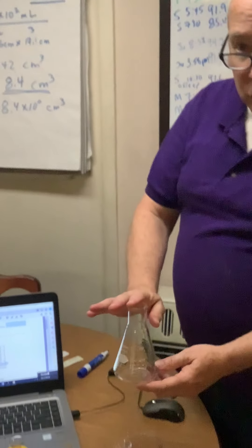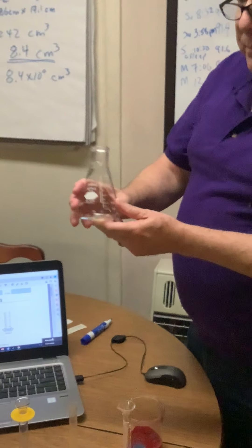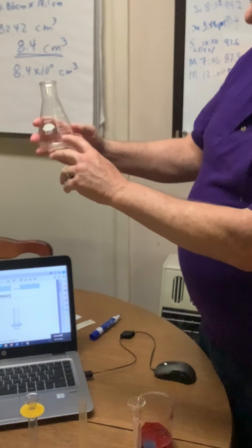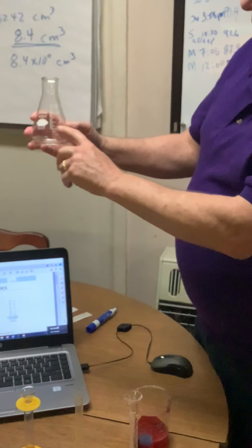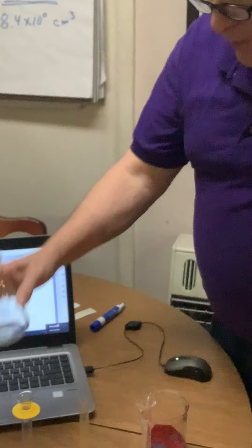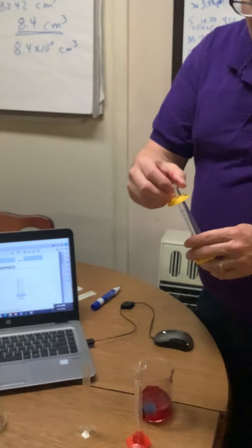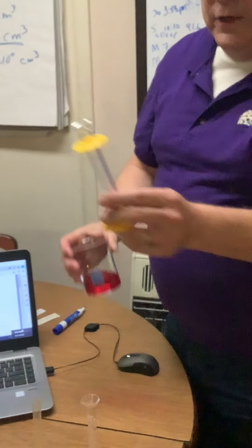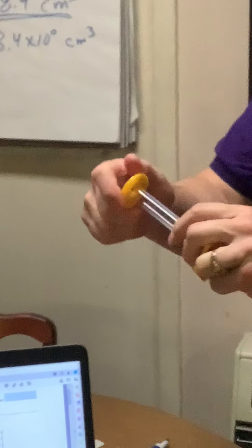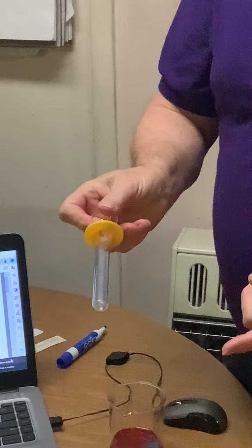So let's look at our assignment. It's called interpreting graphics and starts out with pictures of two graduated cylinders. I have a variety of volumetric glassware here — a beaker, an Erlenmeyer flask, and three different 10-milliliter graduated cylinders.